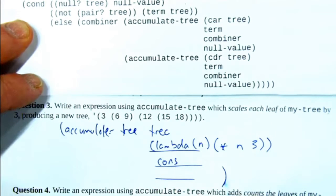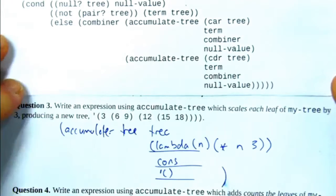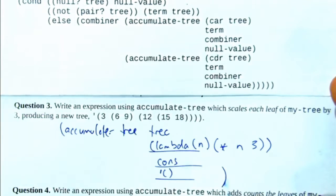And then what's the base case? Yeah, nil or empty list. Yeah, so that scale, that does the scaling.